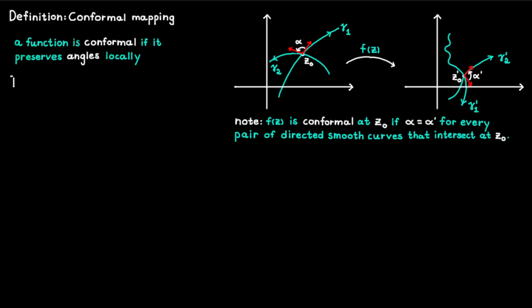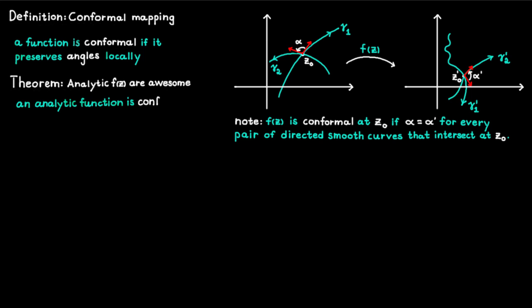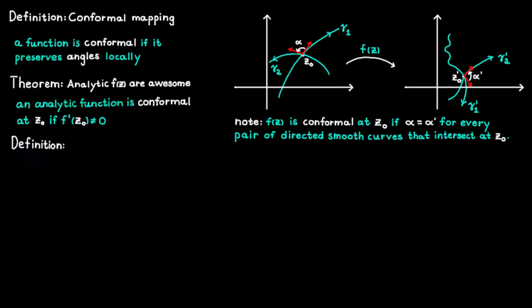Now we will continue with another theorem where we once again see that analytic functions are superior to all other functions. This theorem states that an analytic function is always conformal at the point C0 if the derivative at this point is not equal to zero. I will add a link to the proof of this theorem in the description, but just take my word for it in the meantime. We will need this information when we continue to talk about Möbius transformations.